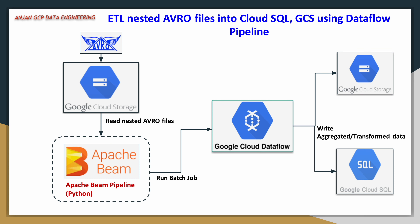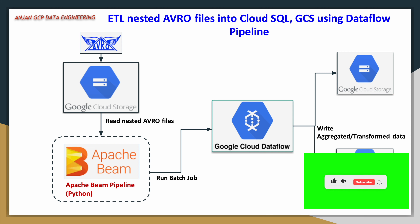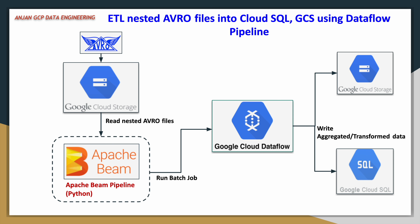This pipeline will process the data and in parallel write data into two different sinks. The first one is a Google Cloud Storage bucket — our pipeline will convert the output data into Avro format and write it into a specific output folder. It will also write the data into a Cloud SQL table.